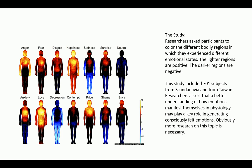There was an interesting study done in 2013 by several Finnish researchers. They asked a sample of around 701 Taiwanese and Scandinavian men and women to look at different emotions. They flashed words like anger, fear, or disgust across a screen and then asked the participants to point out the places where they physiologically experienced that emotion — whether that was a tingling sensation, a neurological stimulus, nerves, or an increase in circulation or blood flow to an area.